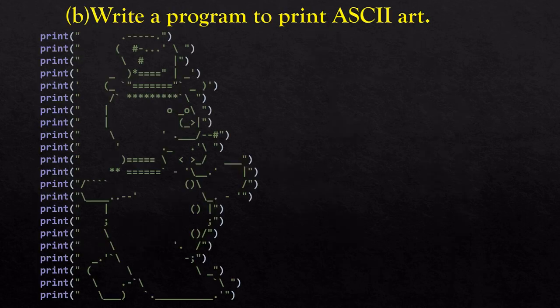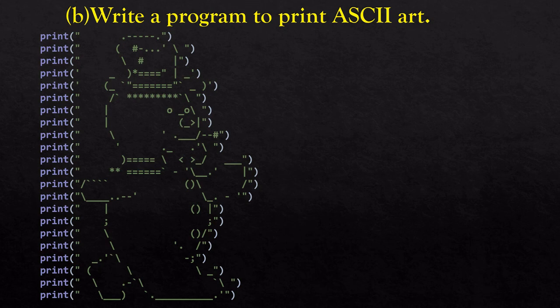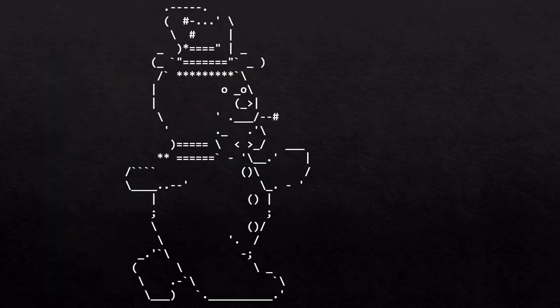For the next ASCII art figure, write print statements in the same way. Notice that some places have single quotes and some have double quotes in the figure. Wherever a single quote appears in your art, keep the entire string within double quotes, and wherever a double quote appears, keep the string within single quotes. Just align the slash, underscore, bracket, stars, and all symbols properly while writing the print statements to get the correct output.